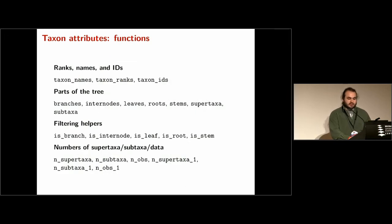With that in mind, here's just a list of some of the functions that this package implements. You can get names, ranks, and IDs. You can get information about parts of the tree - which are leaves, which are roots, the subtaxa of every taxon, things like that. You can get these kinds of things that return logical vectors - is it a leaf, is it a root, is it a stem? This is useful for filtering, and we'll see some of that.